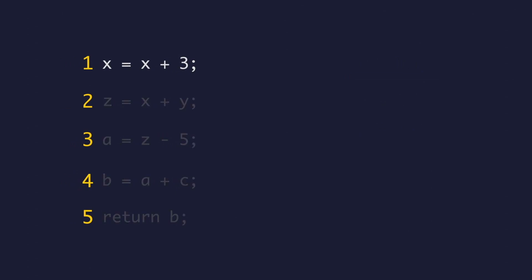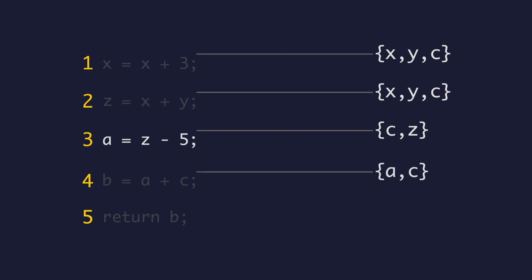In this case, before line 1, we have x, y, and c live as they already possess values which will be used in lines 1, 2, and 4. The same set of variables are live between lines 1 and 2. Between lines 2 and 3, z becomes live as we assign a value to it. x and y are no longer live since they will never be used again. Then, after z is used, a and c are the only live variables between lines 3 and 4. And finally, b is the last live variable between lines 4 and 5 as it gets returned at the end of the program.